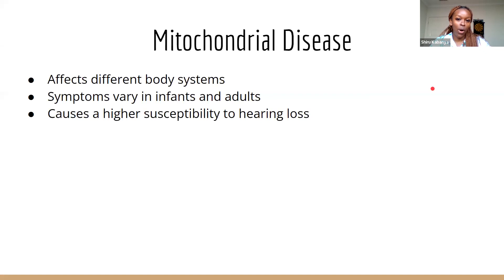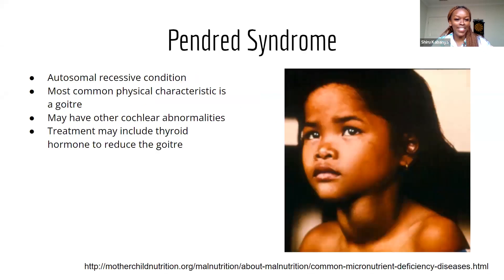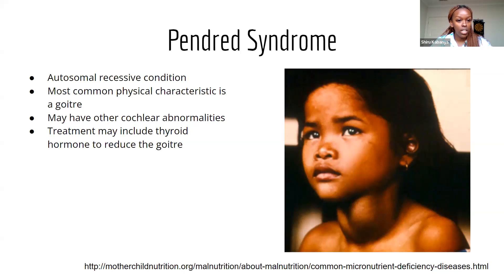Finally, Pendred Syndrome is an autosomal recessive condition associated with goiter — an enlargement of the thyroid gland, as seen in the image — and also associated with a large vestibular aqueduct. There may also be other cochlear abnormalities such as a Mondini deformity, which further affects hearing.